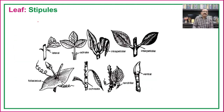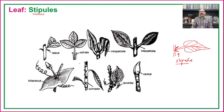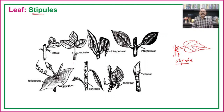The stipule is a leaf-like or scale-like structure present at the base of the leaf. If the stipule develops at the base of the leaf, the leaf is known as stipulate; if the stipule is not developed at the base of the leaf, it is known as exstipulate. There are different types of stipules.